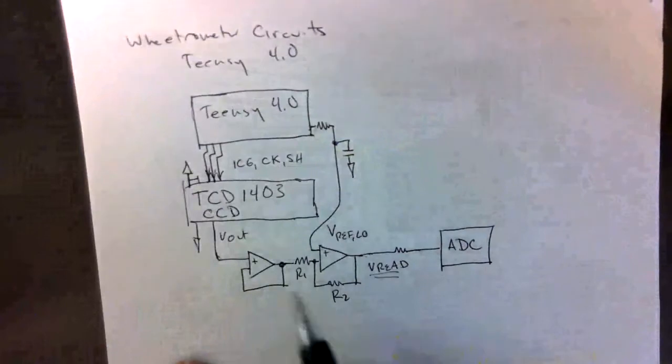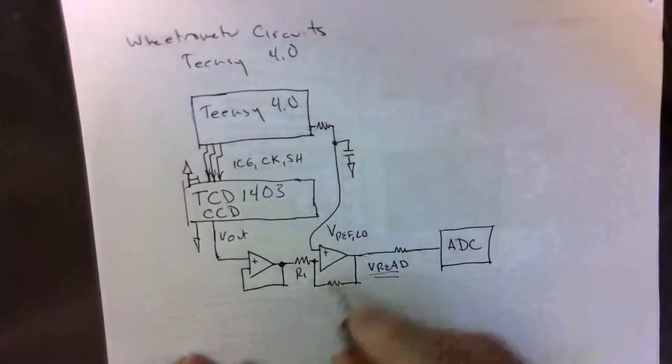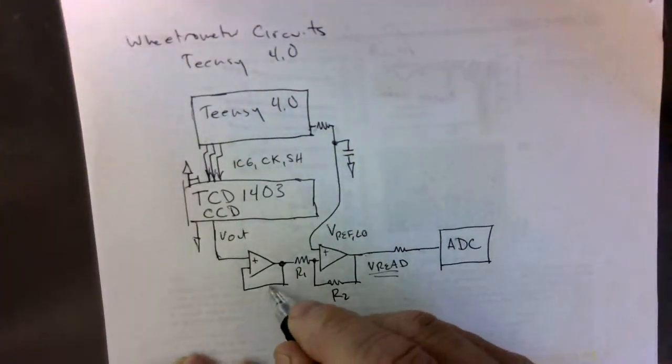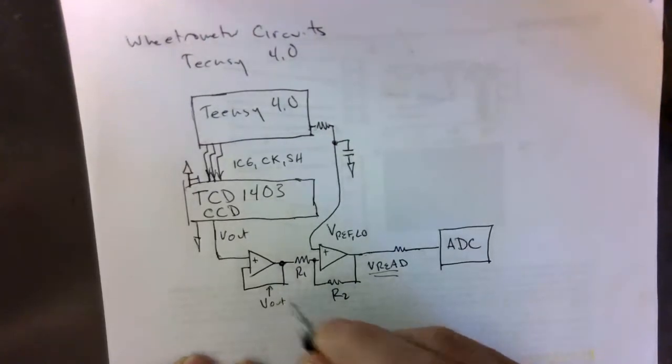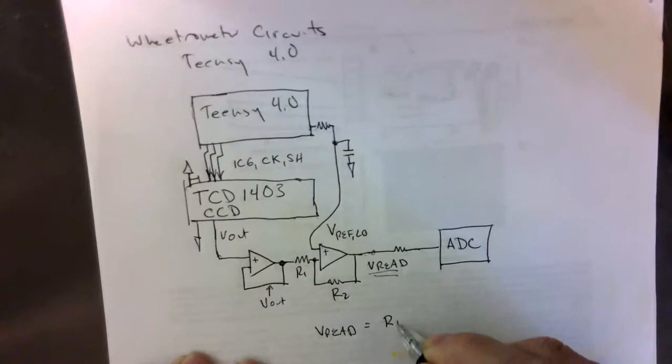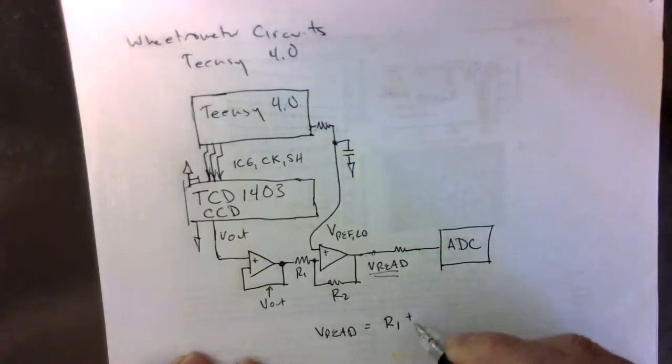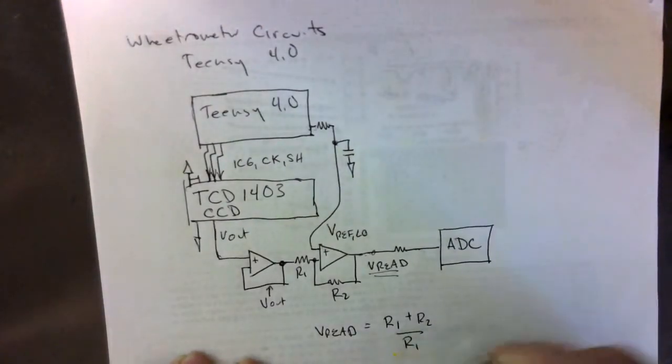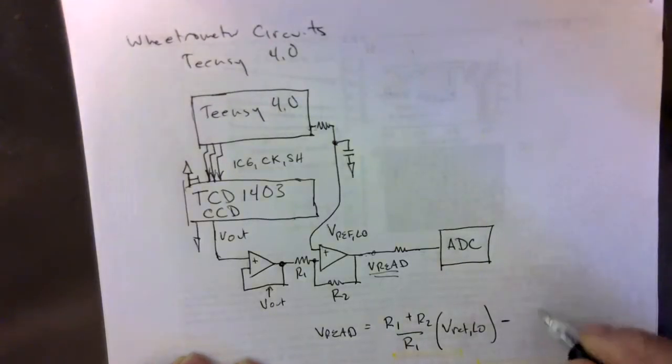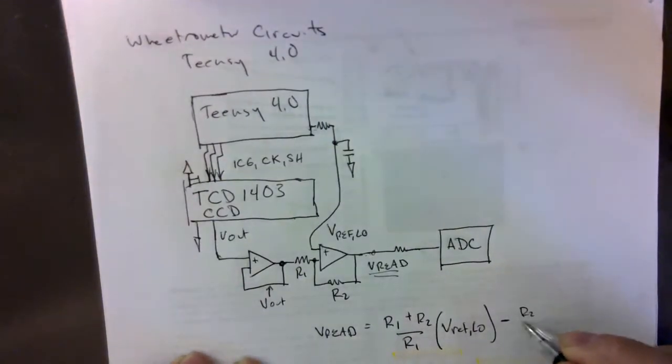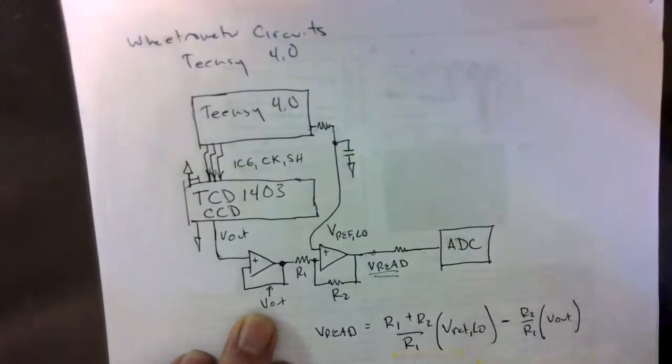So let's take a look at what our circuit here is doing to V output. If we do the calculations, we know that V read is going to be R1 plus R2 over R1 times V ref low minus R2 over R1 times V out.